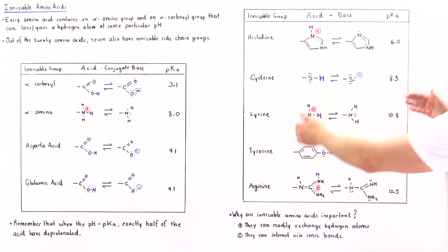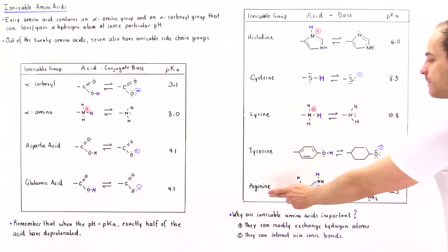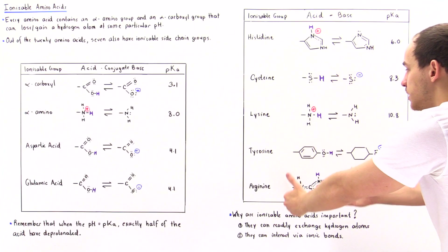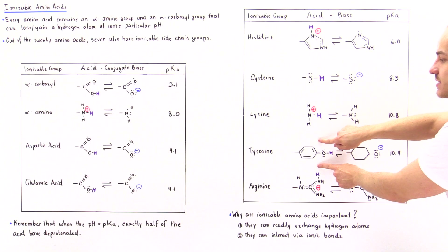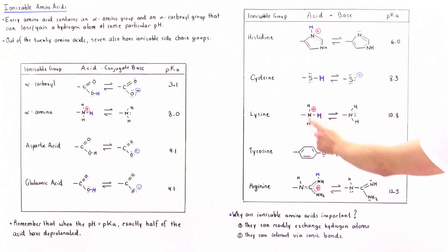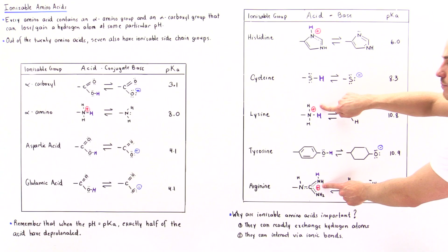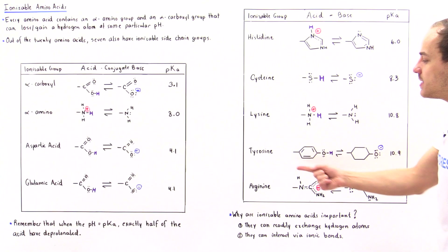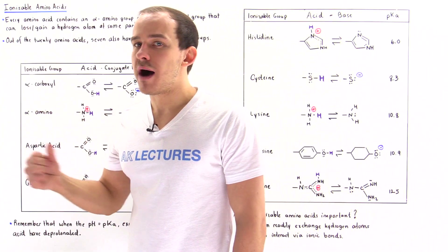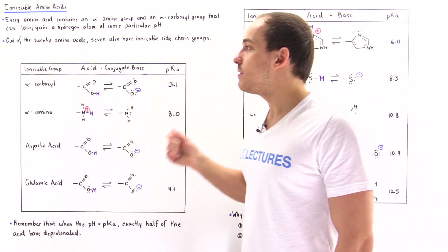Lysine, tyrosine, and arginine have very high, basic pKa values — above 10. For lysine it's 10.8, for tyrosine it's 10.9, and for arginine it's 12.5. At normal physiological pH, these three amino acids will always exist in their protonated form. In the tyrosine case, we have a neutral non-polar sidechain group. In the case of lysine and arginine, they have very polar, hydrophilic sidechain groups because of full positive charges, allowing them to form ionic bonds at physiological pH. Tyrosine, however, will act as a very hydrophobic molecule and will be found inside the protein structure, interacting with non-polar sidechains away from the polar water molecules on the outside.